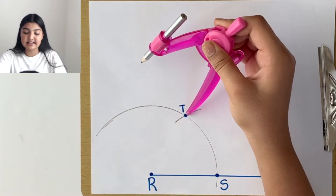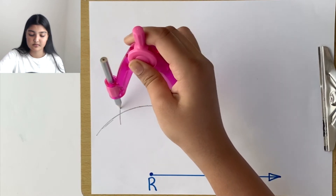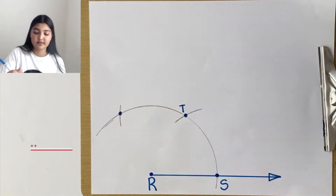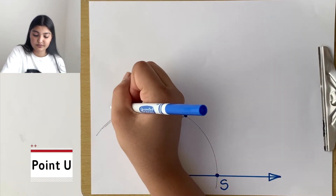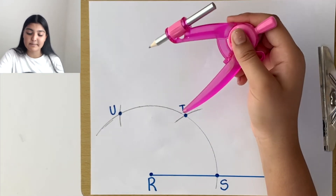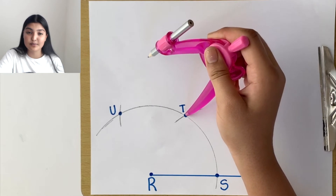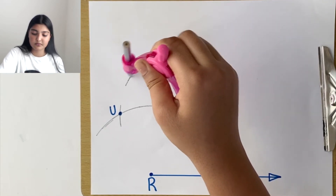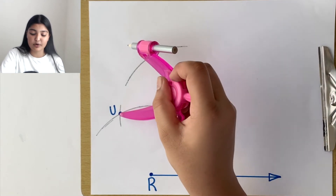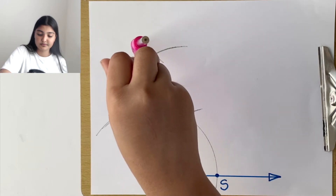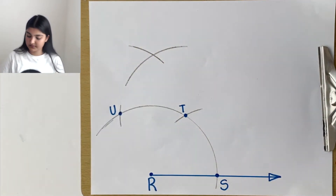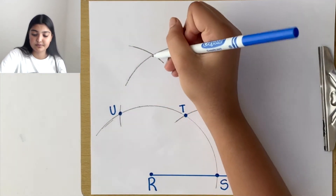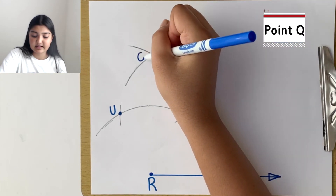Again, with the same compass measurement, place the leg on point T and make another arc. Label this point as U. Then place the leg on point T and make another arc, and place the leg on point U and make another arc. As these two arcs intersect, label that point as Q.